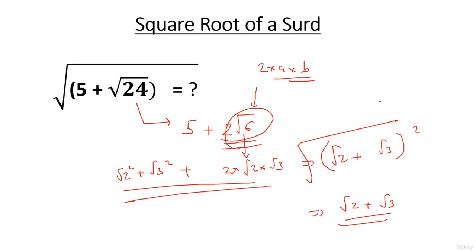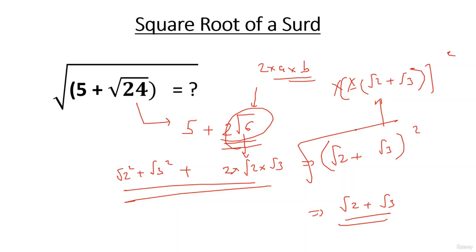You may ask: why can't the answer be minus (√2 + √3)? Because the question asks for √(5+√24) and there is already a square root symbol outside. The answer of a square root cannot be negative. As we studied in number theory, the square root of any positive number must be positive. So the answer is √2 + √3.